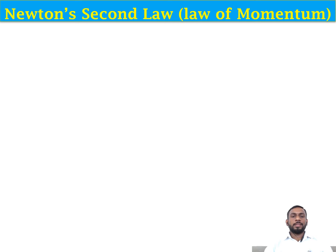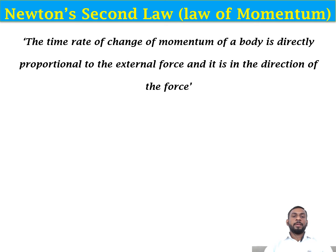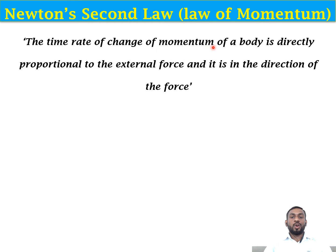In the second law, we call it the law of momentum. The law states that the time rate of change of momentum of a body is directly proportional to the external force and in the direction of that external force. Momentum is defined as mass times velocity — P = mv. Momentum can be understood as inertia in motion: just as inertia at rest resists change of rest position, momentum resists change in motion.